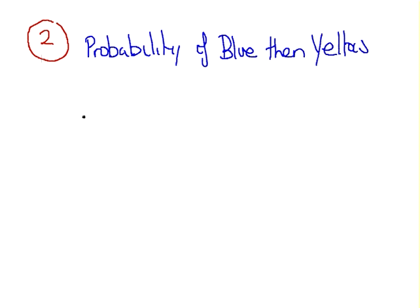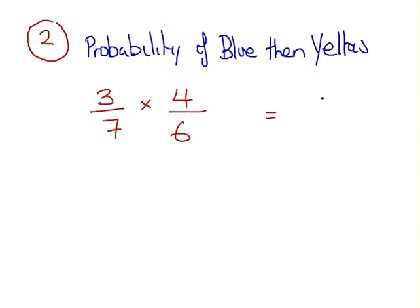Now we're going to compute the probability of blue then yellow. In the first instance, there are seven balls of which three are blue, so the first part of our calculation is three over seven. There are six balls left; one of the blue ones has gone out, so there are only two blue left, but that means there are still four yellows left — so four yellows out of six. The answer to that is, again, two over seven.